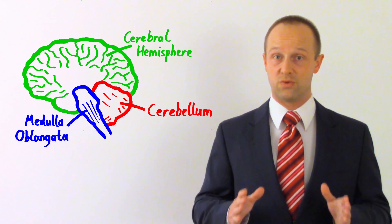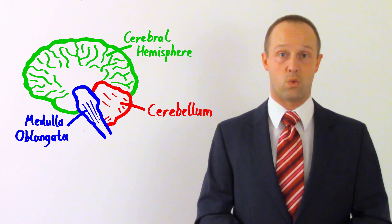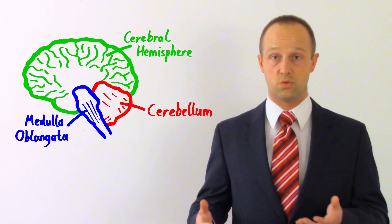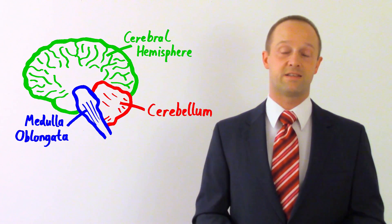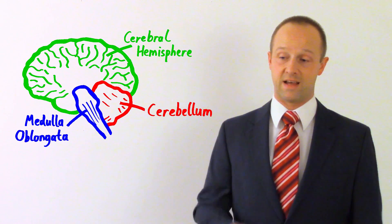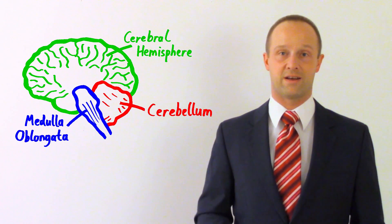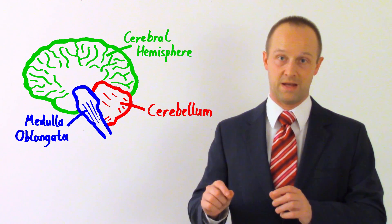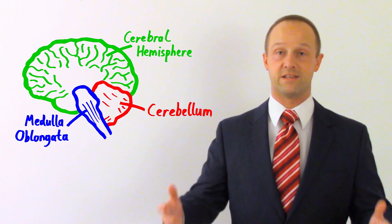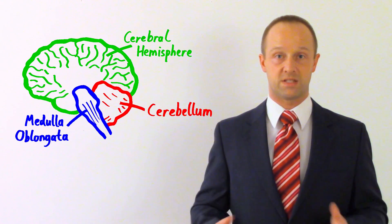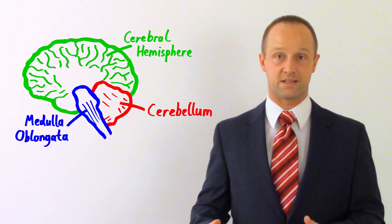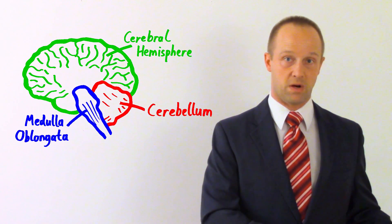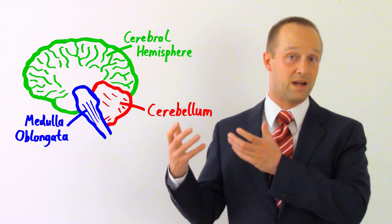We still don't really understand the cerebral hemispheres all that well. We have a reasonable idea about roughly which parts do which things, but it's a bit like being able to point at a map and say 'that's Europe, that's America' — you're not going into an awful lot of detail about individual parts. We do know that perceptual information from the right-hand side of your body is controlled by the left hemisphere, and the left-hand side goes to the right hemisphere.